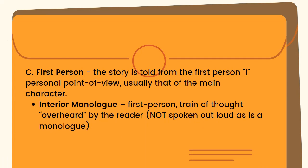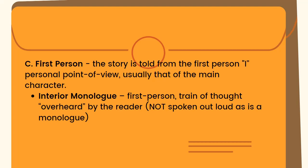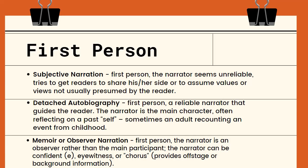Next, we have the first person point of view. We can identify it when we see the pronoun 'I' — the story is told from the first person, personal point of view, usually that of the main character. There are different types: the first is interior monologue, which is the first person train of thought overheard by the reader — not spoken out loud. Interior monologue expresses what the character thinks, the voice inside his head.